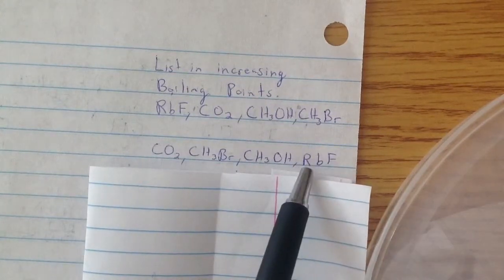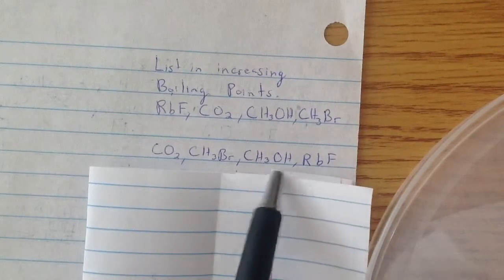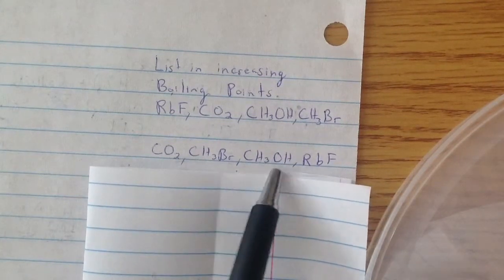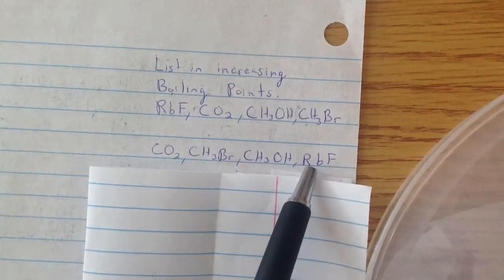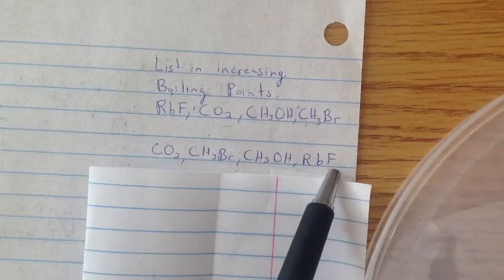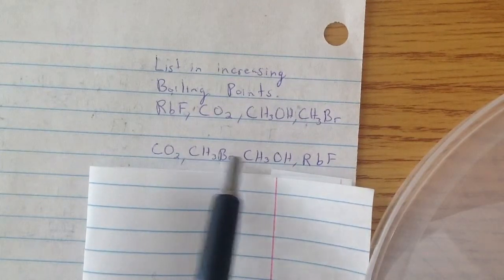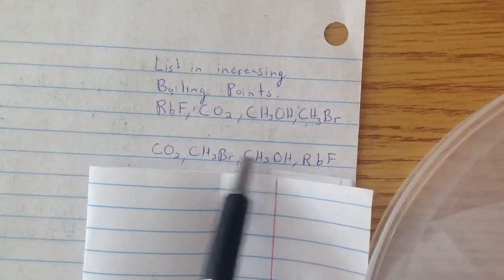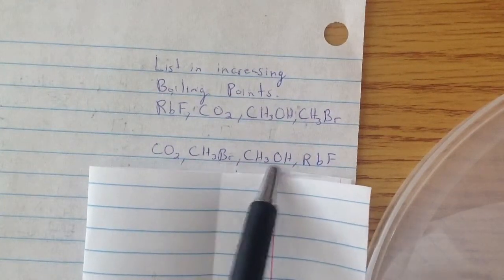And why this is strong is because it's a metal to a non-metal. These are all just non-metals. But this is a metal to a non-metal. So the electrons are going to be actually taken away, rather than here, where it's shared. It's a polar covalent bond, but it's still kind of shared.